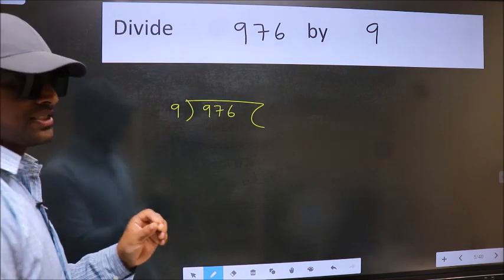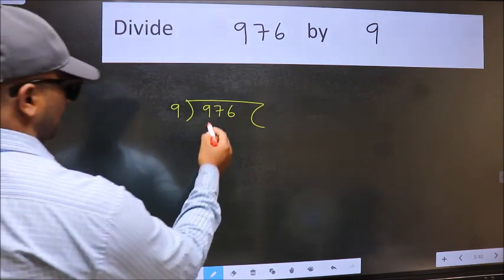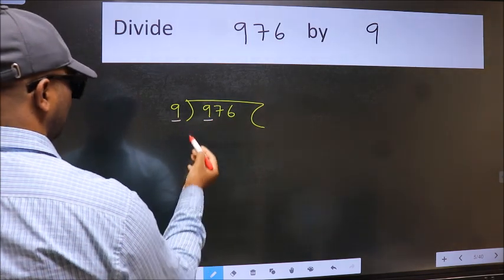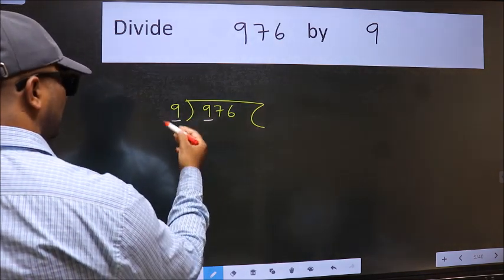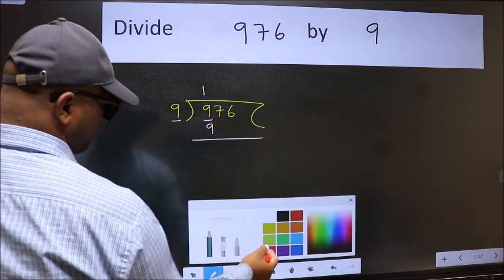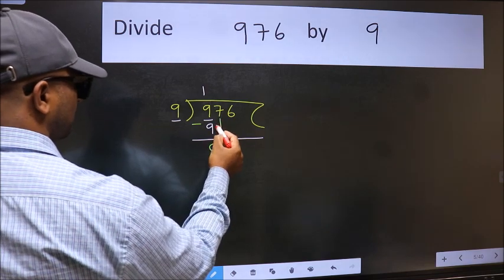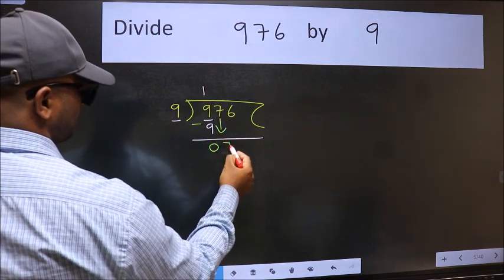This is step one. Next, here we have nine and here nine. When do we get nine in nine table? Nine once nine. Now we should subtract. We get zero. After this, bring down the next number, so seven down.